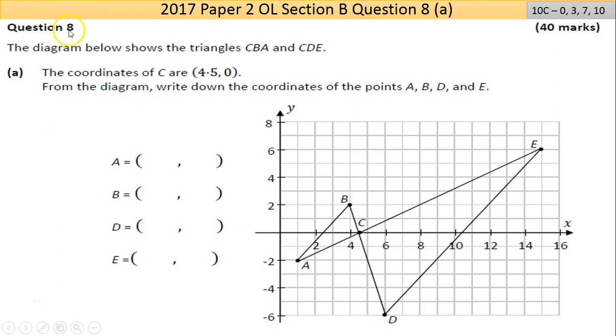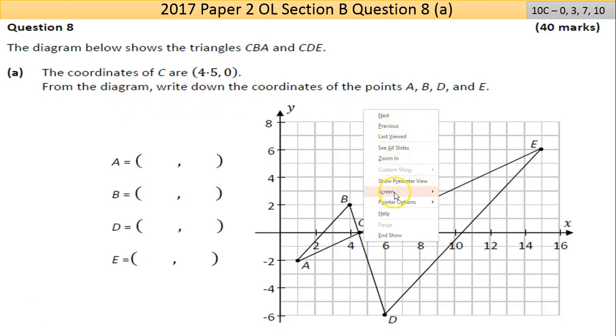Hi and welcome to question 8 of the 2017 maths paper 2, Leaving Cert Ordinary Level. I'll get stuck in here now. It's a 10-mark question, part A. Given the coordinates of C are (4.5, 0), we're asked then to identify from the diagram and write down the coordinates of A, B, C, D, and E.